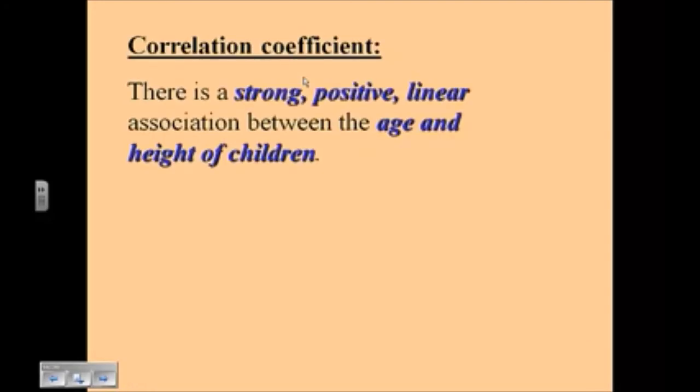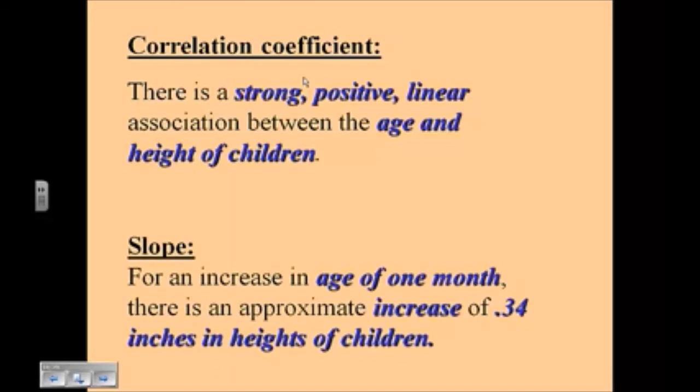So interpretation-wise, what you would write is you would say that there is a strong, positive, linear association between the age and the height of children. Strong because it was 0.99, positive because it was going upward and linear because it made a straight line, and then the context between the age and the height of the children. For slope, you would say for an increase in the age of one month, so in other words for every one unit increase on the x-axis, there is an approximate, circle that, that's very important, approximate increase of 0.34 inches in the heights of children.